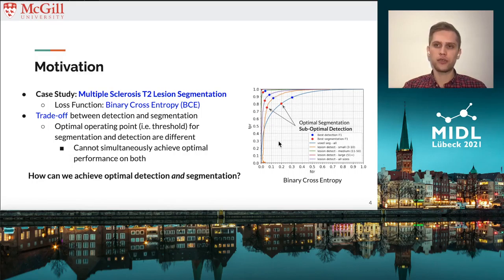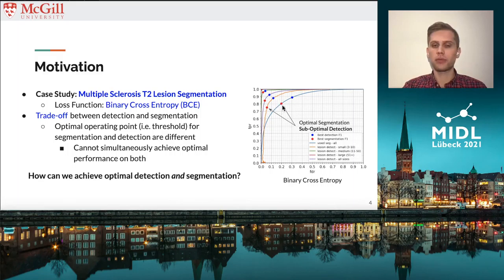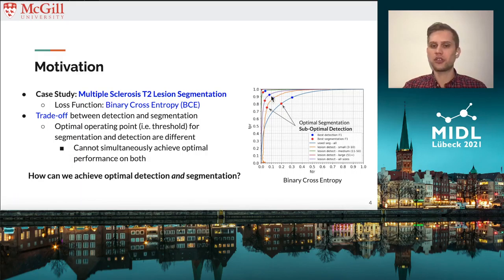The remaining curves correspond to lesion-level detection performance stratified by lesion size. For example, the orange curve corresponds to lesion-level detection performance of small lesions, which are 3 to 10 voxels in size. The red dot corresponds to the optimal segmentation operating point, which is the threshold corresponding to the highest segmentation F1 score, or DICE. The blue dot corresponds to the optimal detection operating point, which is the threshold corresponding to the highest detection F1 score.